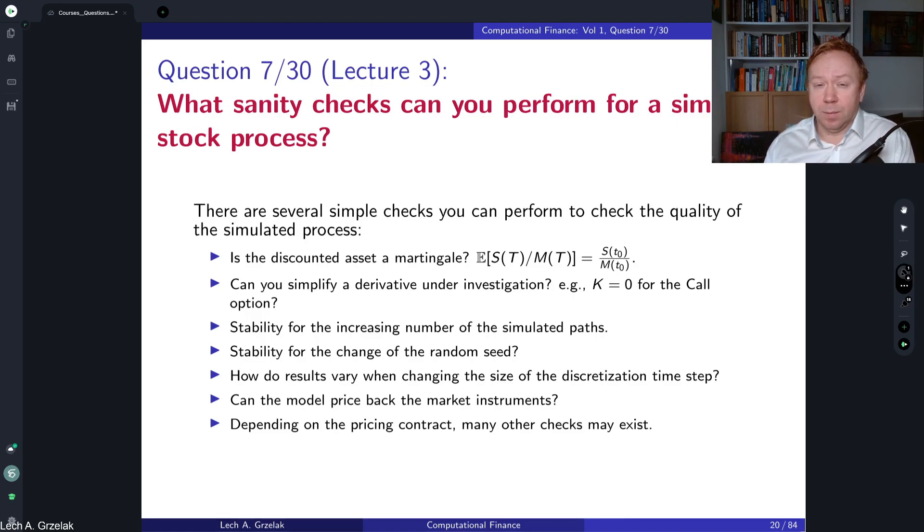We know that the discounted asset class, assets like stocks, they have to be martingales. This means that the expectation of St over Mt has to be equal to S0, M0. So this is a first simple check that you can do to check whether you have not made very obvious mistakes.